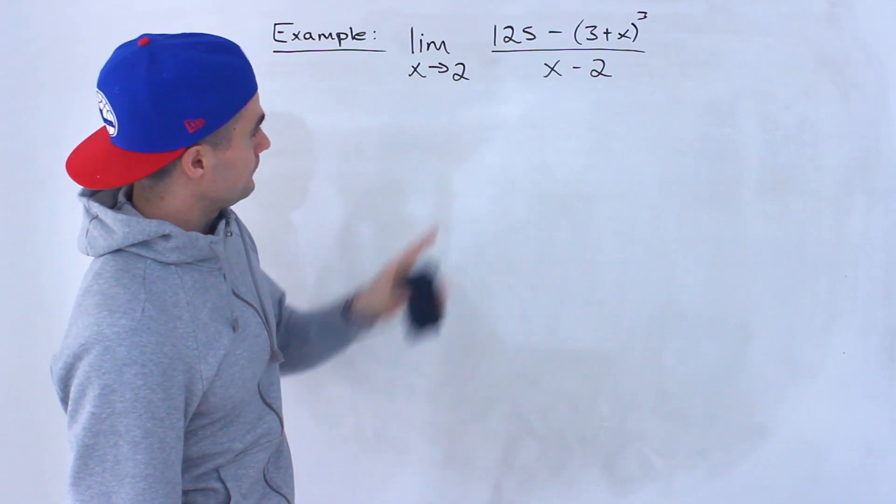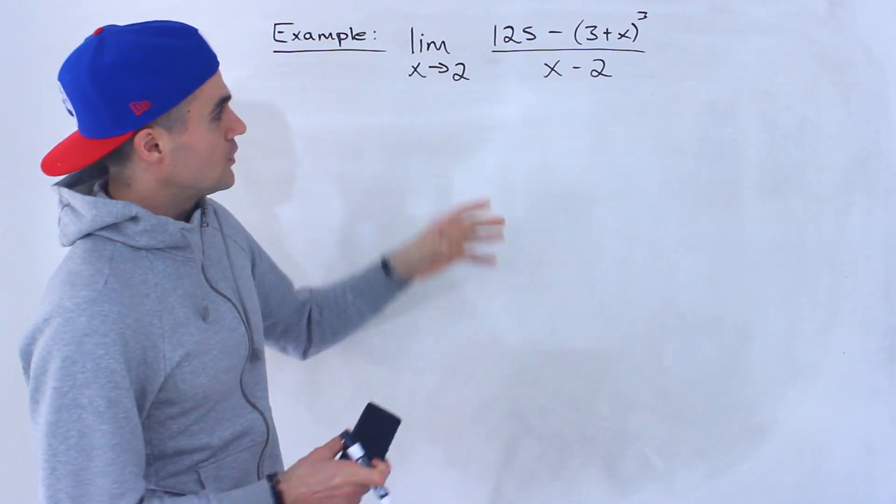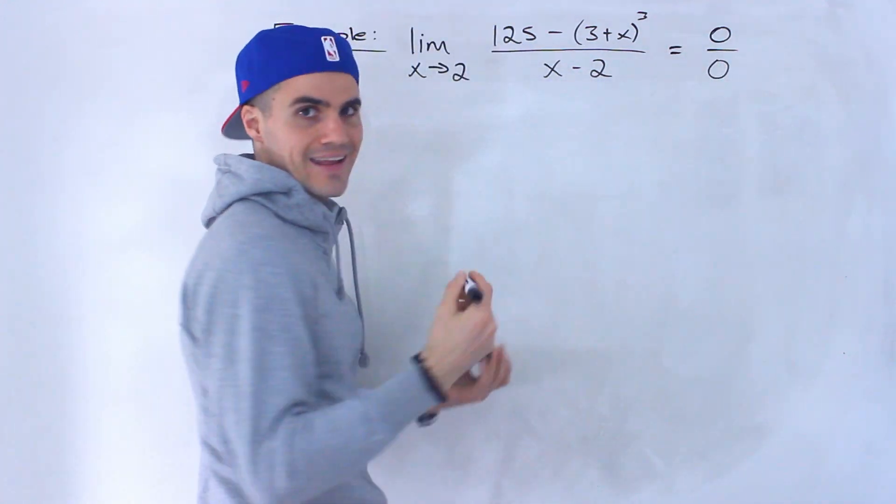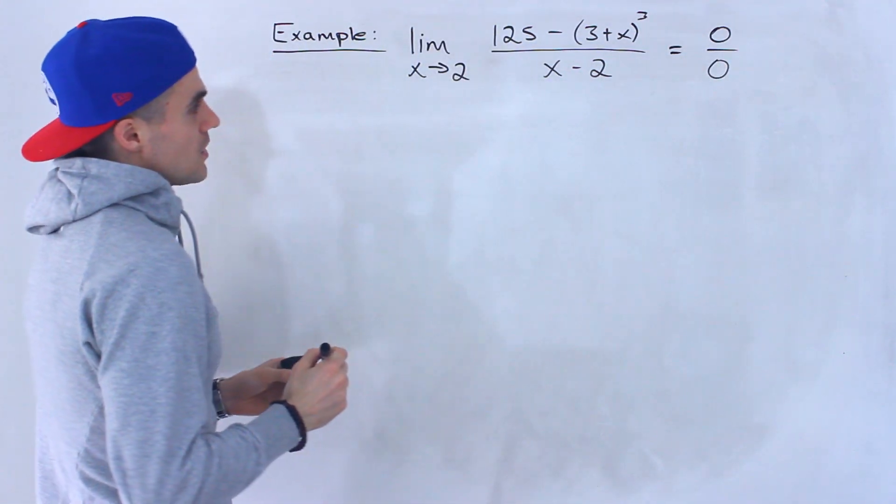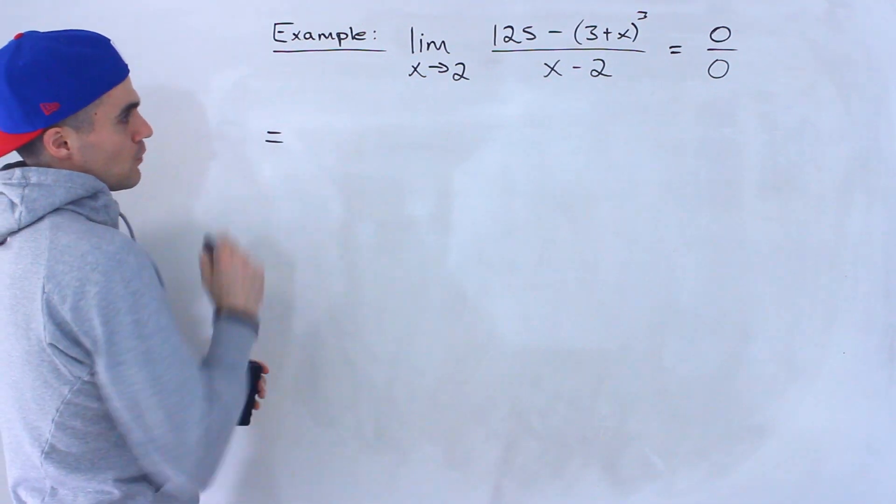Now notice if we do a direct substitution here, if we plug in 2 for x, we're going to end up getting 0 at the top and 0 at the bottom. It's in that indeterminate form, so unfortunately we can't do a direct substitution. We're going to have to go about this in a different way.